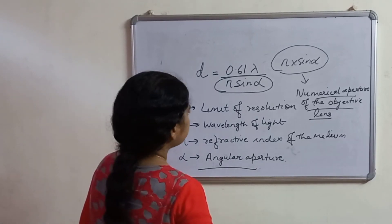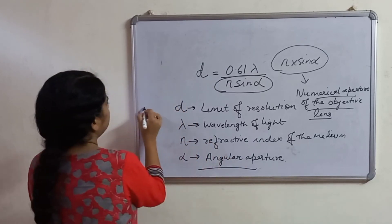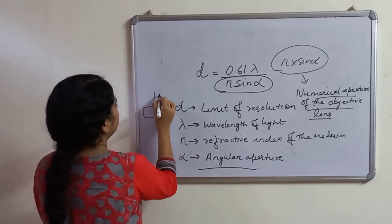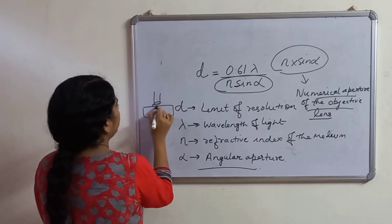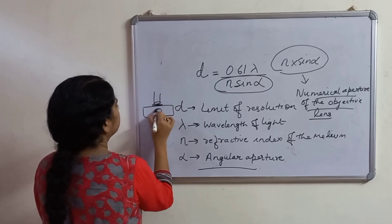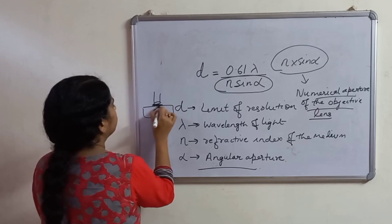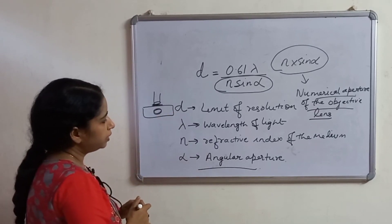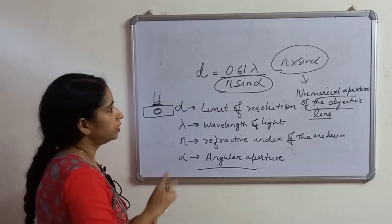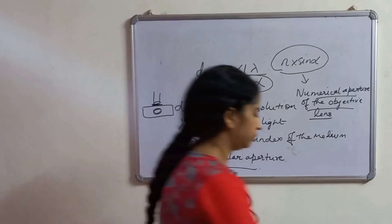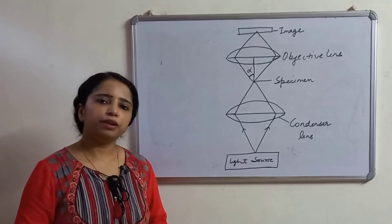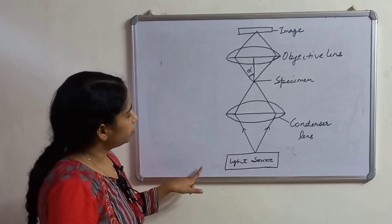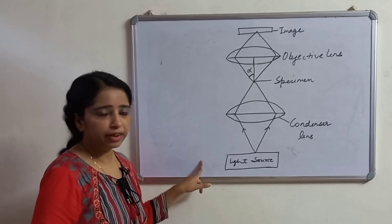So here we have the specimen and the objective lens, and the oil is used between them. Now let me explain the angular aperture.